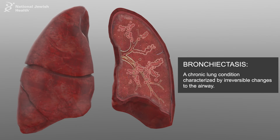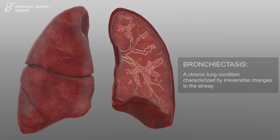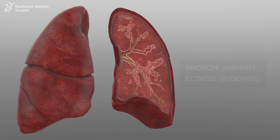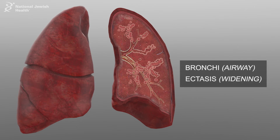Bronchiectasis is a chronic lung condition characterized by irreversible changes to the airway. The term is derived from the Greek translation of bronchi, meaning airway, and ectasis, which means widening.